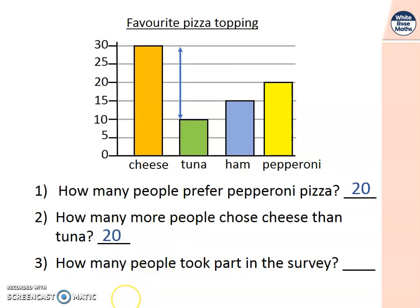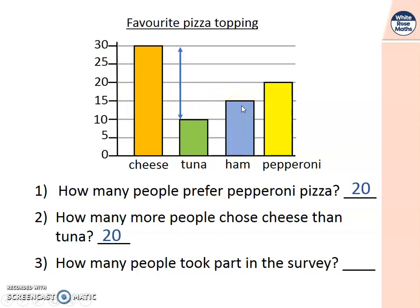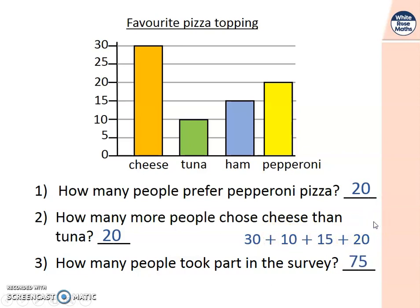Number three: how many people took part in the survey? That means how many people did they ask? All these people voted for cheese, tuna, ham, and pepperoni - so we need to add them all together. The cheese bar is at 30, add 10 is 40, add 15 is 55, and add 20 more makes 75. Well done if you got that correct.